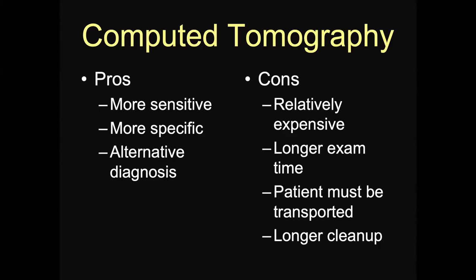What about CT? CT has pros and cons. It's a lot more sensitive — sensitivity has been reported to be quite high in the literature, in the high 90s. Of course, it depends on the prevalence of the disease and when you scan. It's a lot more specific, but the specificity is still rather low — in the mid-50s or 40s, depending on what series you read and what else is going on in the environment. Back in March, we had a lot of flu in Madison, Wisconsin — so I was still more likely to encounter influenza than COVID-19.